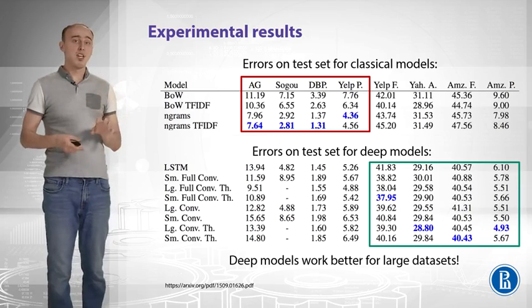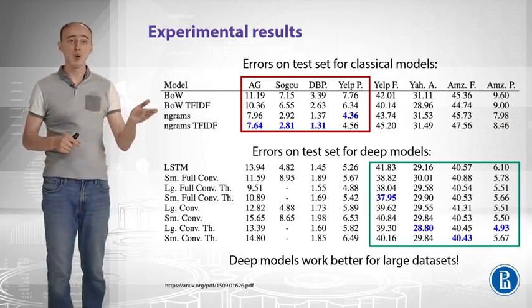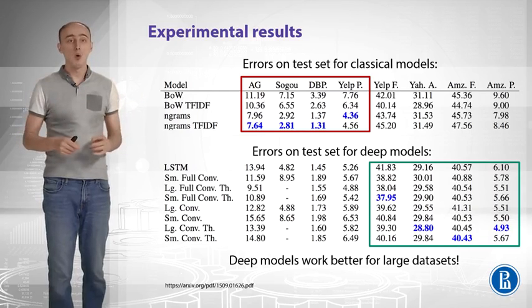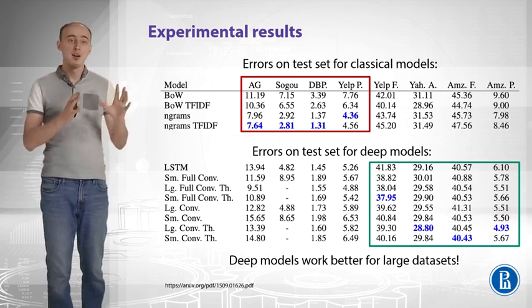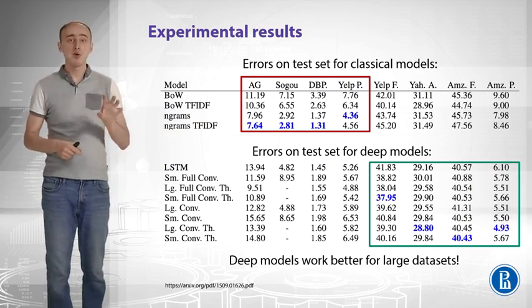The first table that you see contains errors on test set for classical models. For classical models like bag of words or bag of words with TF-IDF with linear model on top of that. Or you can replace tokens with n-grams to do the same thing.